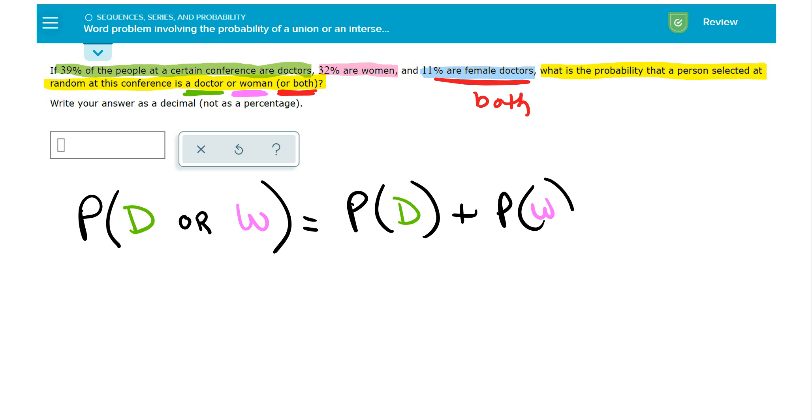Now, the problem is when you add up all the people that are doctors and all the people that are women, you've already covered the both situation. Because in the doctors, you're counting all male and females already right there. And when you count the women, you're counting doctors and not doctors. So between the two, you've already covered the both part.